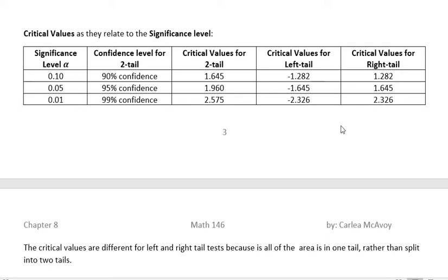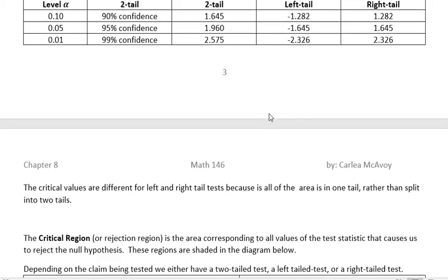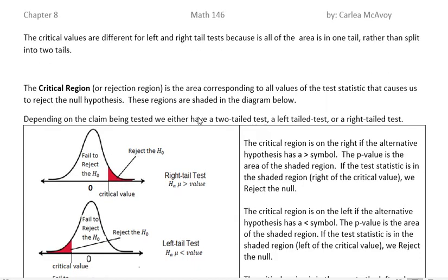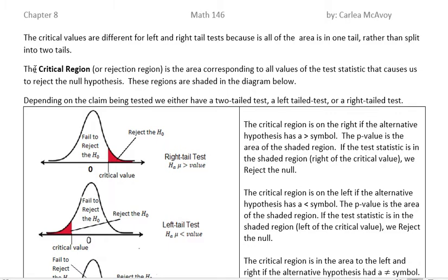So those are something that you can calculate on your own as you need to, but you can also refer back to this chart. The critical values are different for left and right tail tests because the area is in one tail rather than split into two. So I think maybe looking at this picture that I have here will help you understand that.